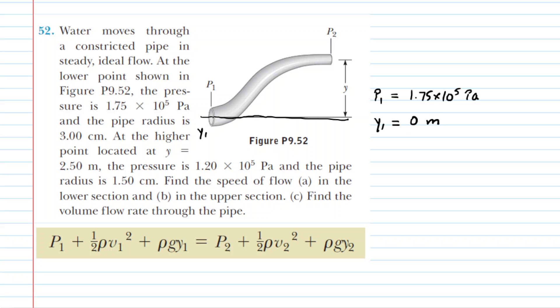This is water flowing through, so we know that the density of the fluid is going to be the density of water, which of course is 1,000 kilograms per meter cubed.